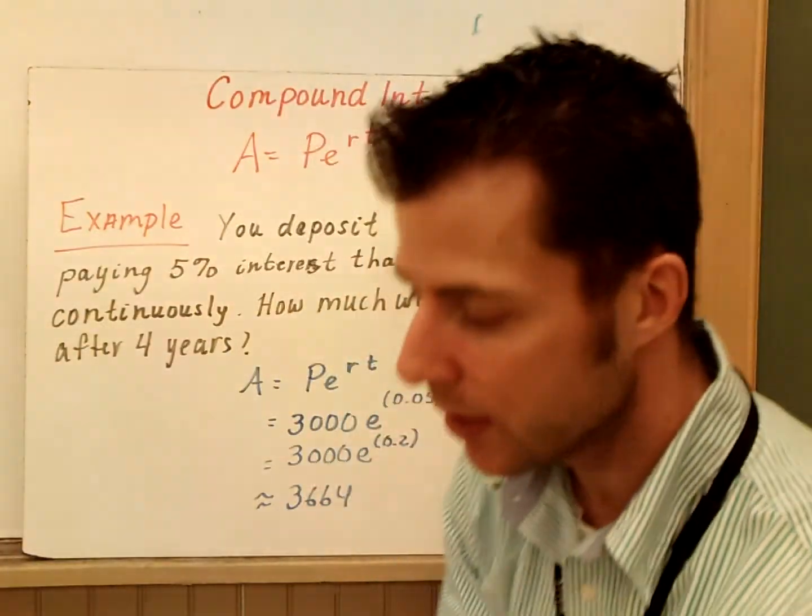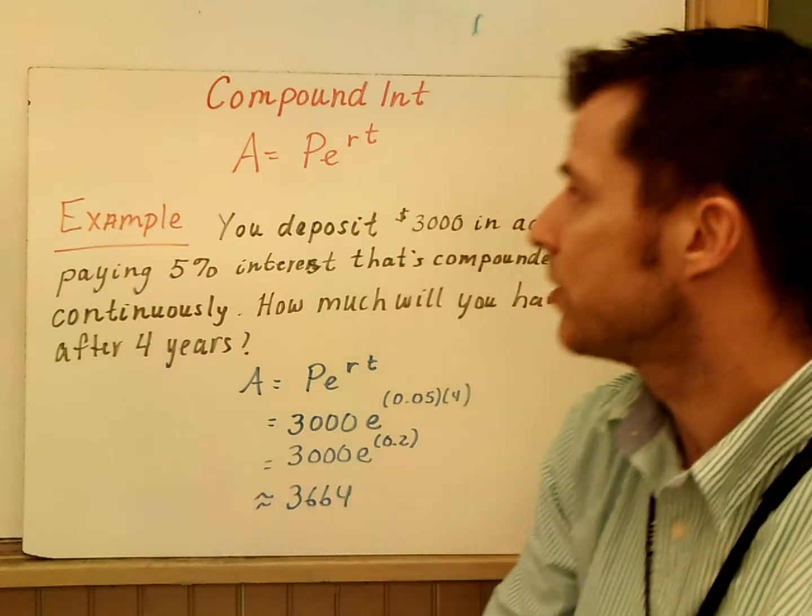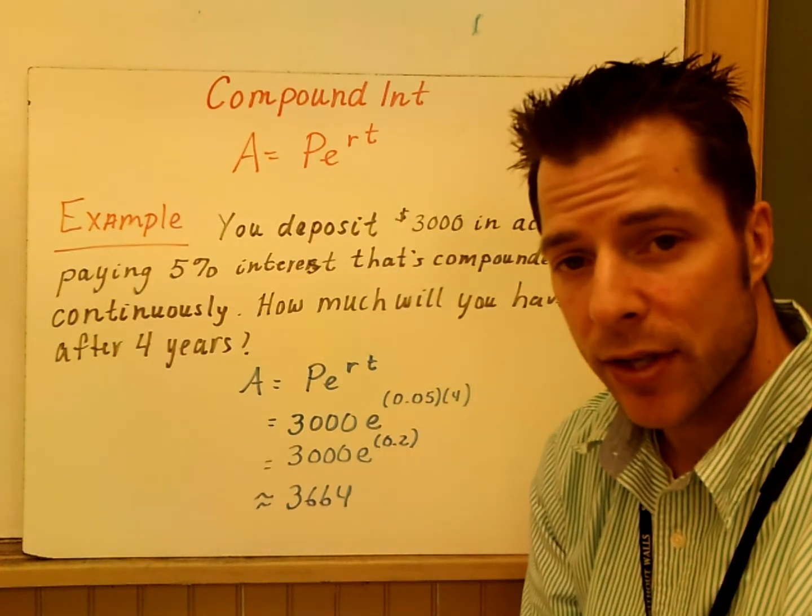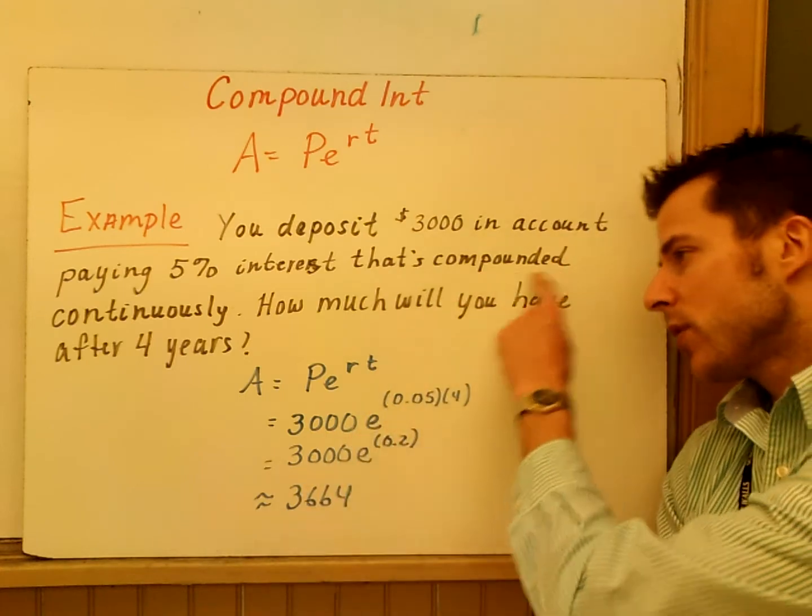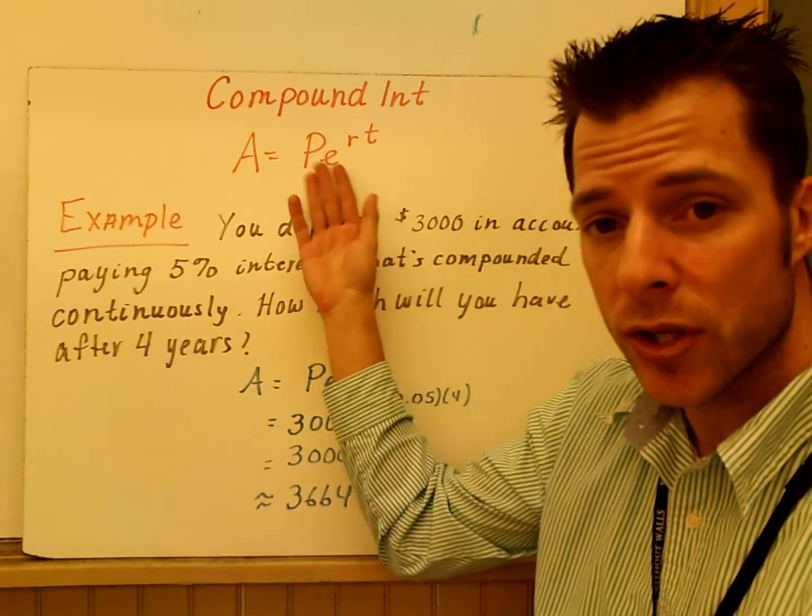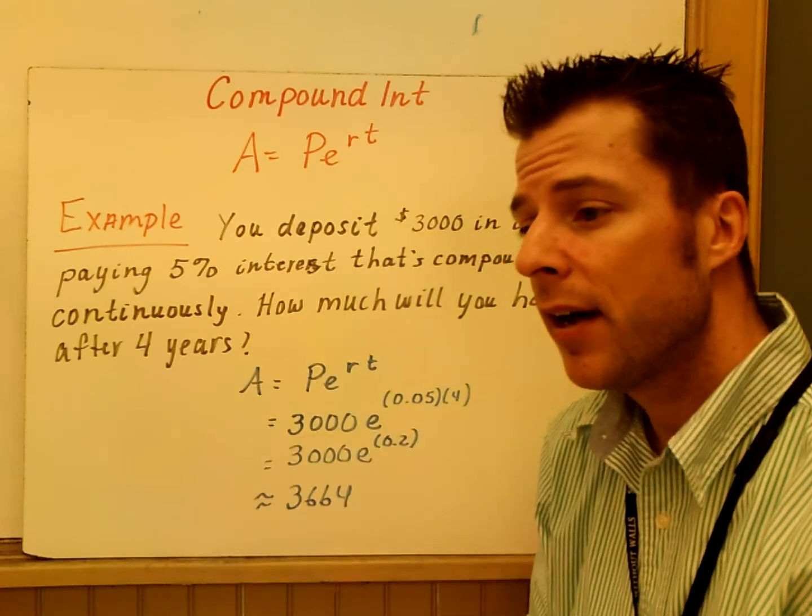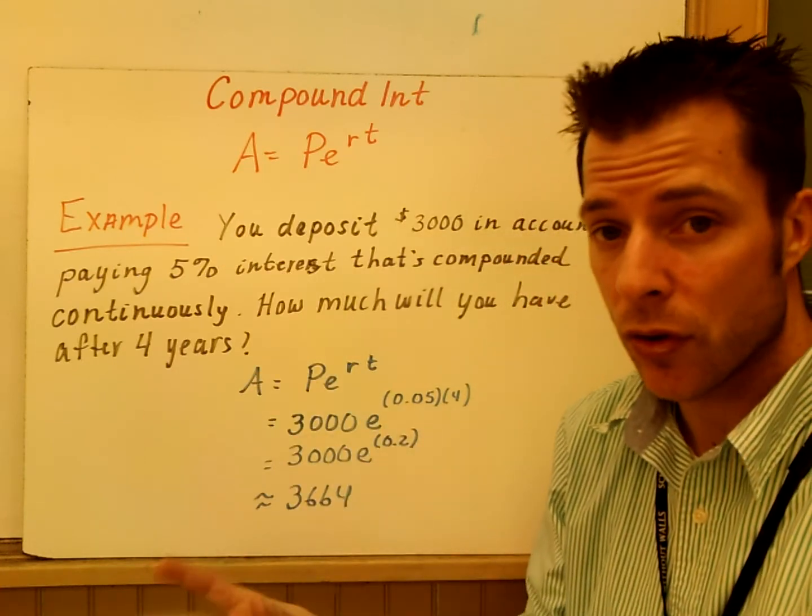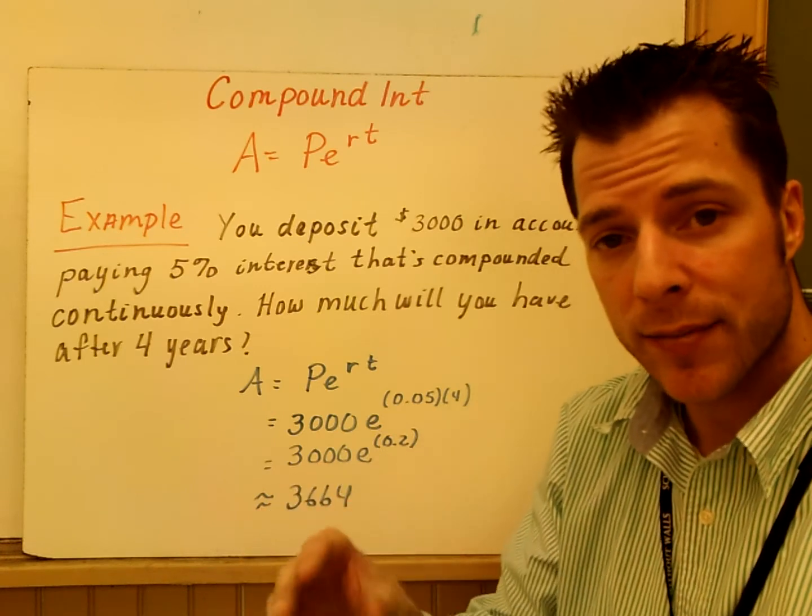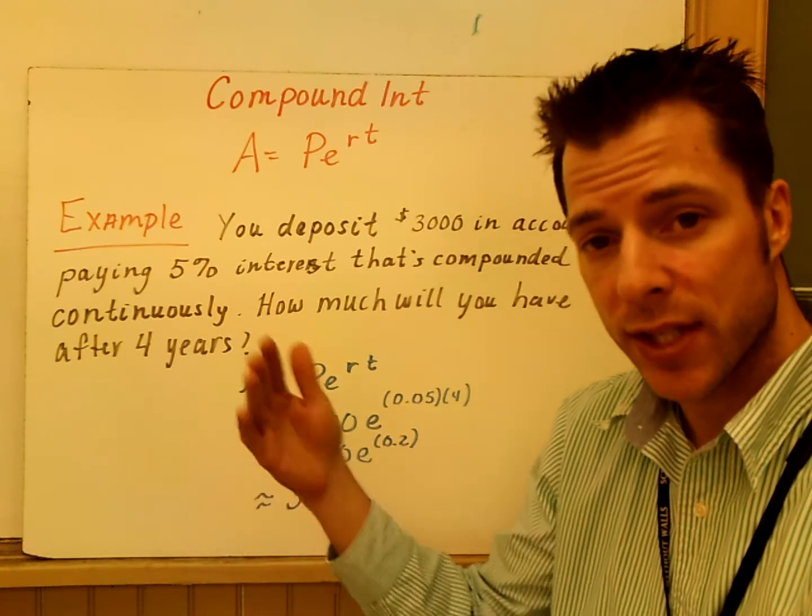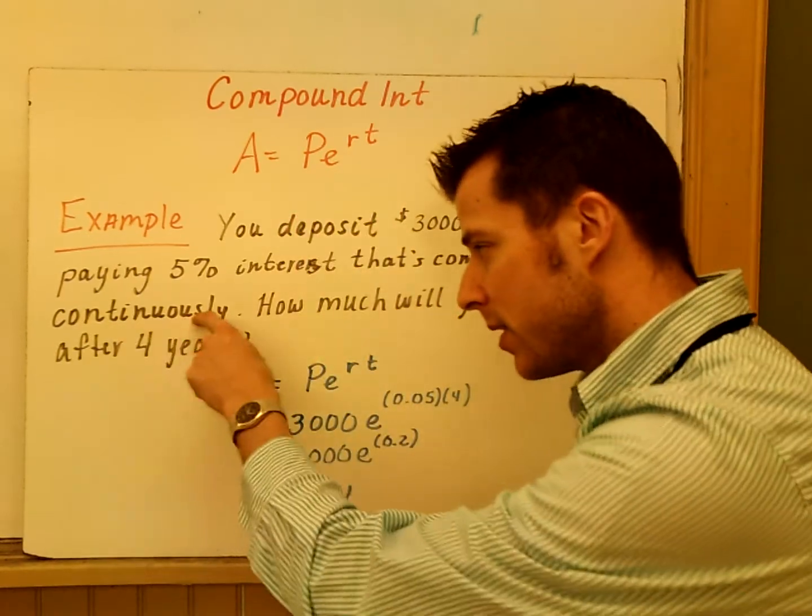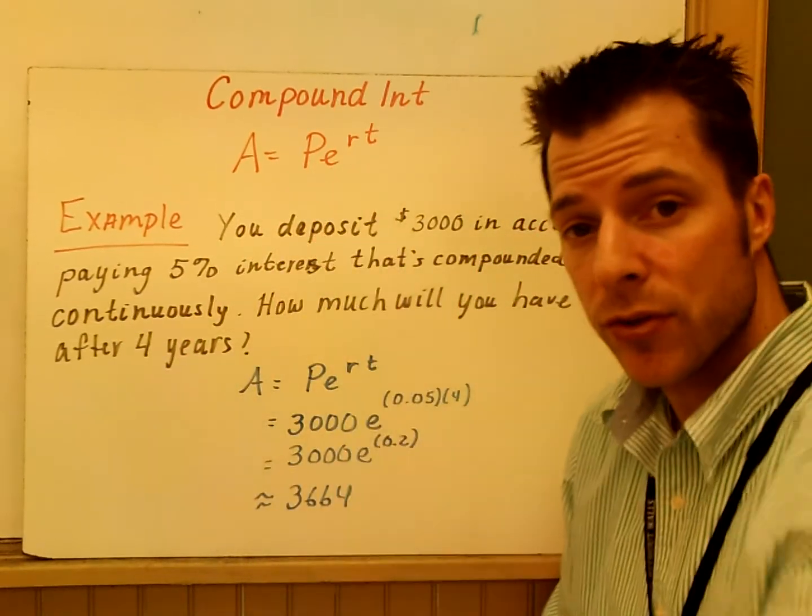The last example here is A equals Pe^rt. It's compound interest. And the compound interest, when you see compounding continuously, this is the equation you use. In the last video, we looked at an exponential growth or decay model. We had A of T equals A times the quantity, 1 plus R, raised to the T. This is different. If you hear or see compounded continuously, that's the only time you're going to use this equation.